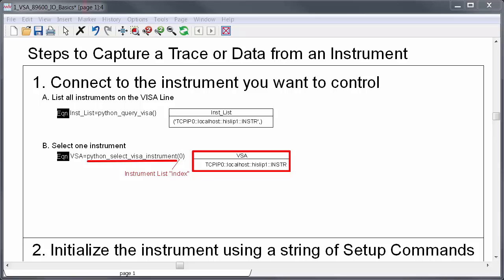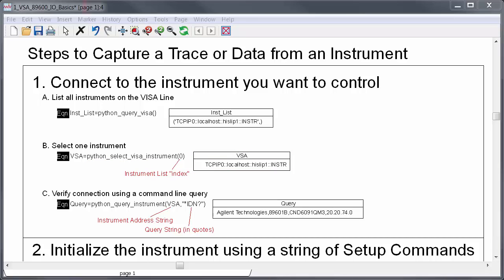It's a good idea to verify connectivity to the instrument before moving on. So to do that, I'll send a simple command line query using python query instrument, then the instrument id, and then the query string. So for example, star id and question mark will give you the identity of the instrument, and the equation returns the result, in this case the name of the VSA. By the way, all SCPI commands need to be inside quotes in ADS because they're strings. Okay, so we're talking with the VSA software. Step one is complete.